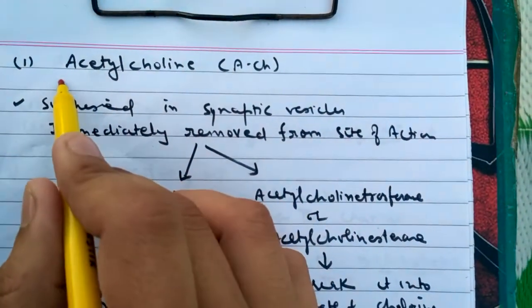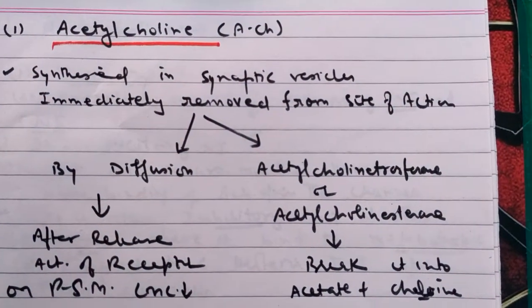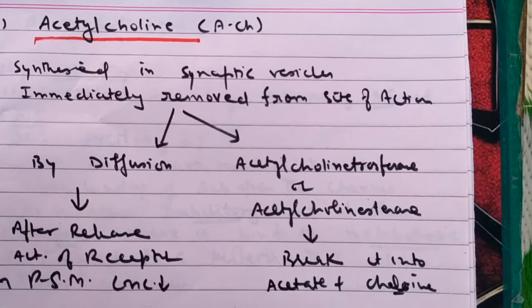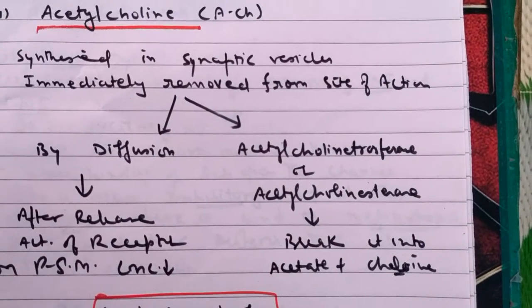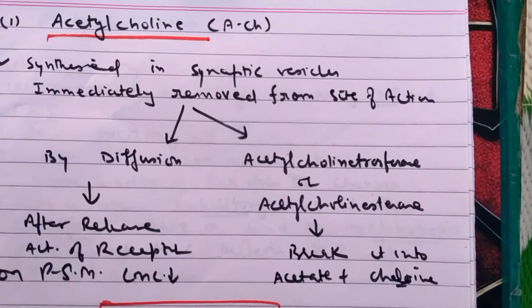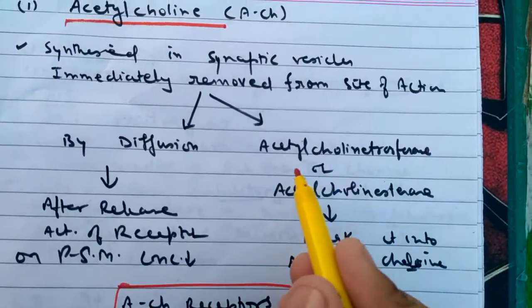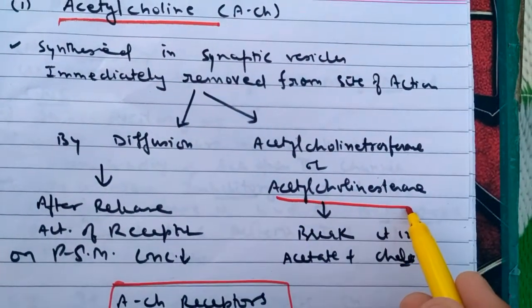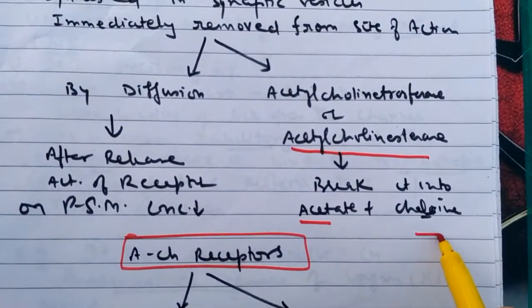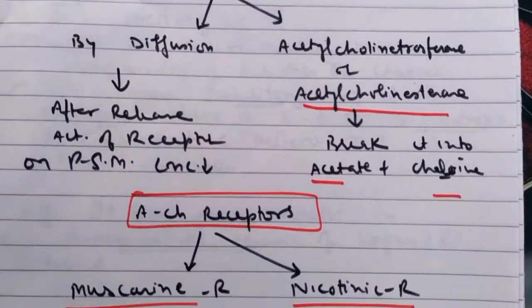Acetylcholine is synthesized in the synaptic vesicle and is immediately removed from the cytoplasm after doing its effect. It is immediately hydrolyzed or broken down into its components by diffusion or by acetylcholinesterase. This enzyme breaks acetylcholine into acetate and choline. In diffusion, it moves from higher concentration to lower concentration.